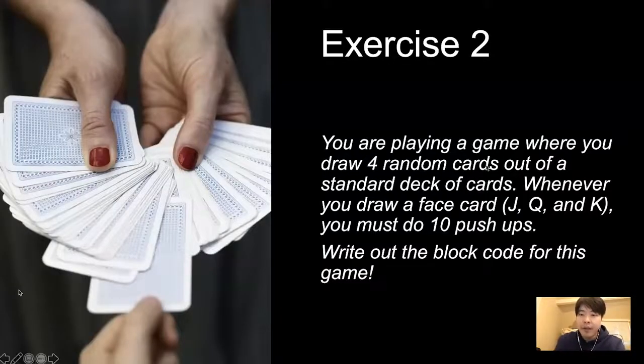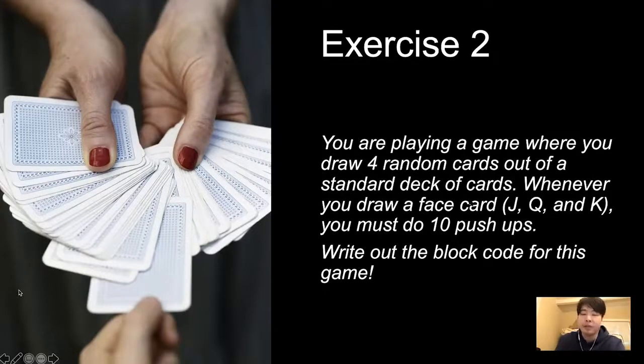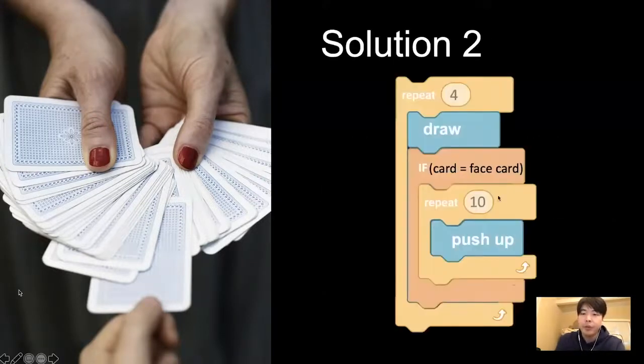Moving on, exercise two. You're playing a game where you draw four random cards out of a standard deck of cards. Whenever you draw a face card of Jack, Queen, or King, you must do ten push-ups. This is a silly game, yes, but the purpose is to write out a block code. Pause the video and think about how we might do this. Welcome back. Solution: we can draw a card, and we have an if statement. If the card is a face card, you push up ten times. But if the card is not a face card, we don't process this action. We just skip and repeat this process four times.